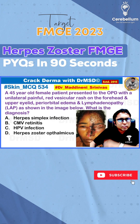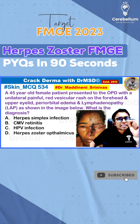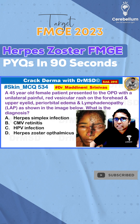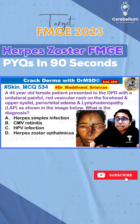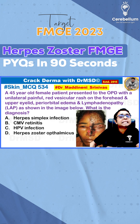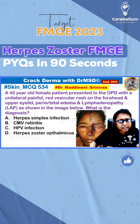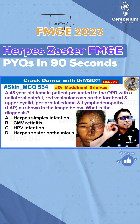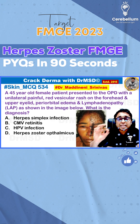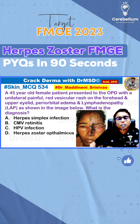One question for all of you: there is a named sign associated with herpes zoster ophthalmicus where if the tip of the nose has vesicular lesions, then most likely the cornea will also get affected. If you know the answer for this named sign, leave it in the comments below.